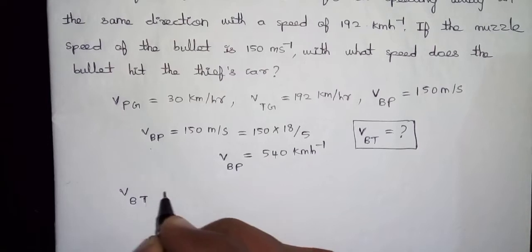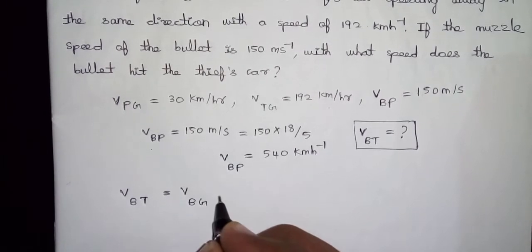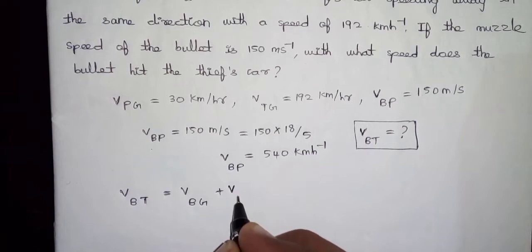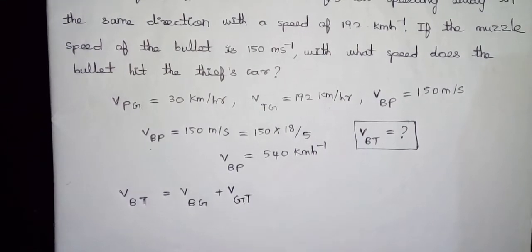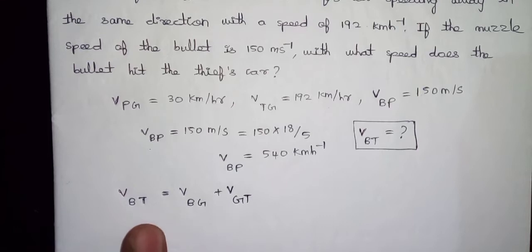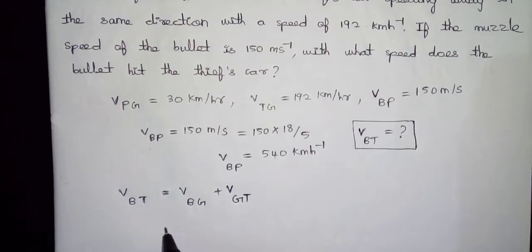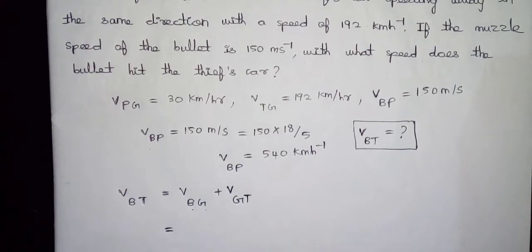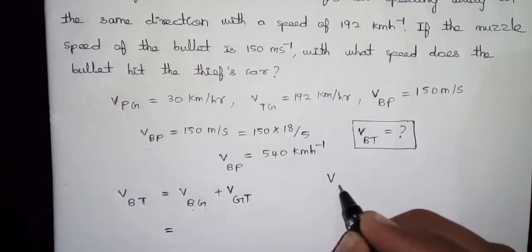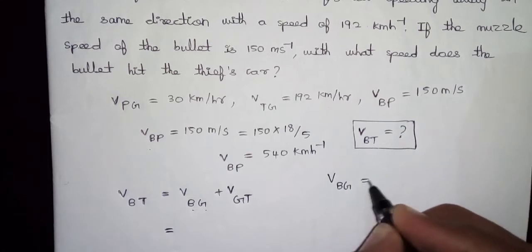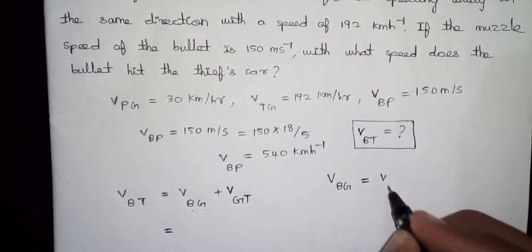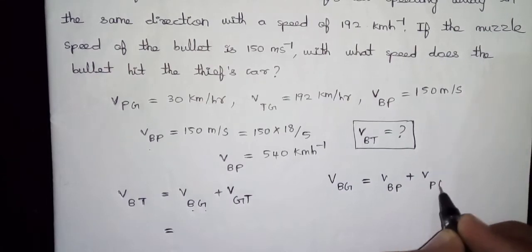V of BT — the velocity of the bullet with respect to the thief — is equal to the velocity of the bullet with respect to the ground plus the velocity of the ground with respect to the thief. To find the velocity of bullet with respect to thief, we first need the velocity of bullet with respect to ground, which comes from the velocity of bullet with respect to police and the velocity of police with respect to ground.